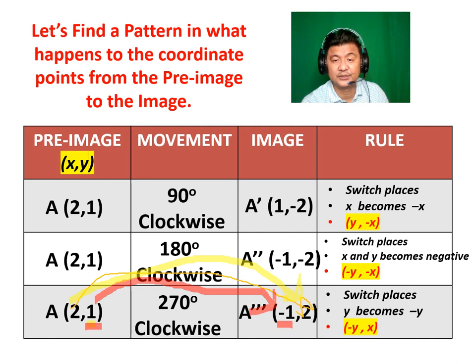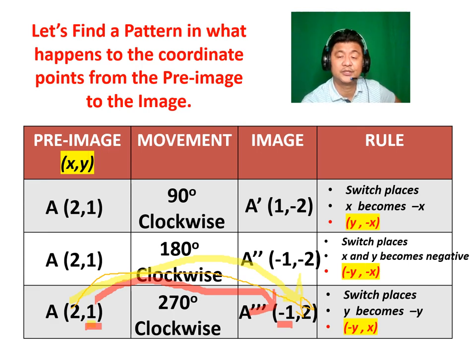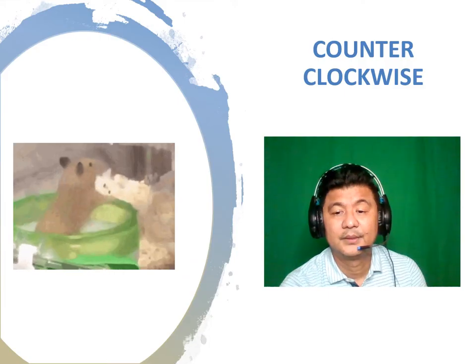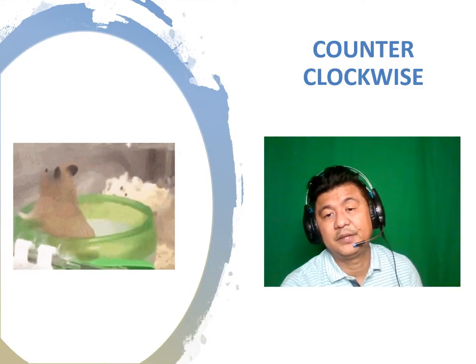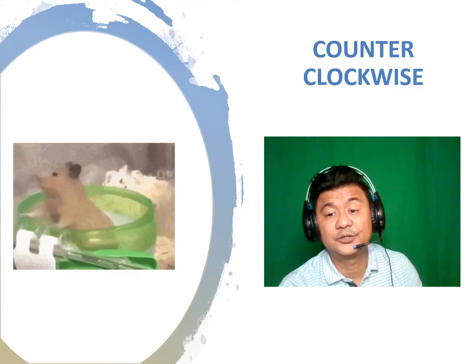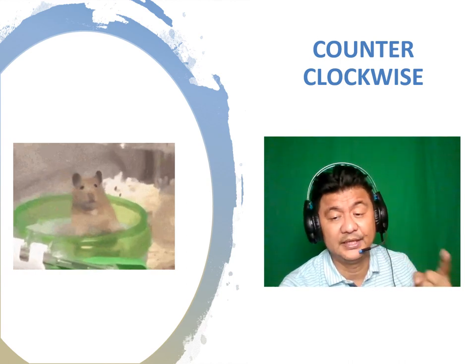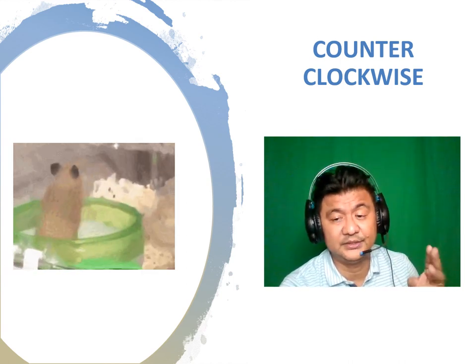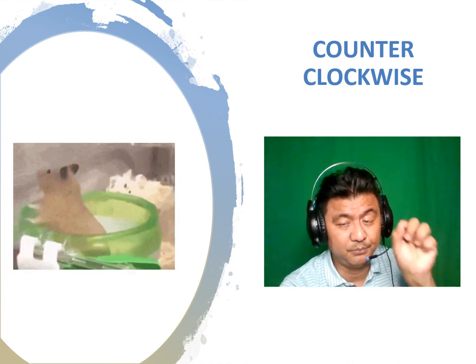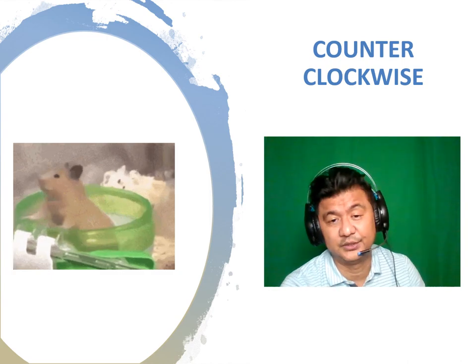These are the rules for clockwise direction. Now you might ask — how about counterclockwise? We will experiment on counterclockwise now, again with the 90, 180, and 270 degrees at (0, 0).